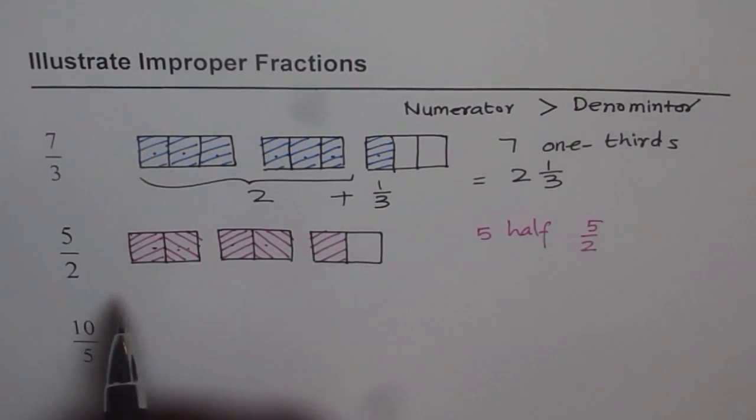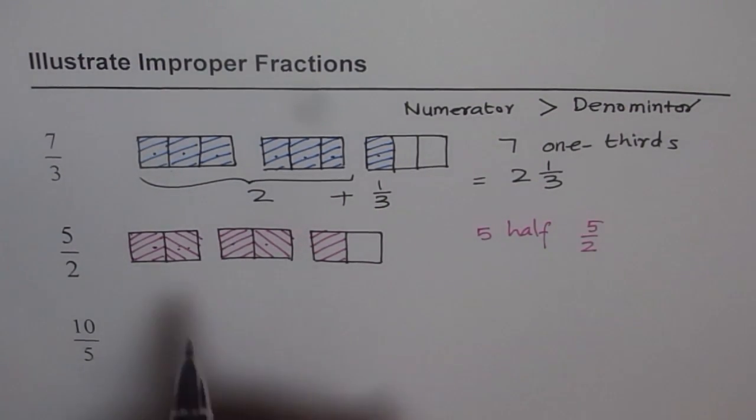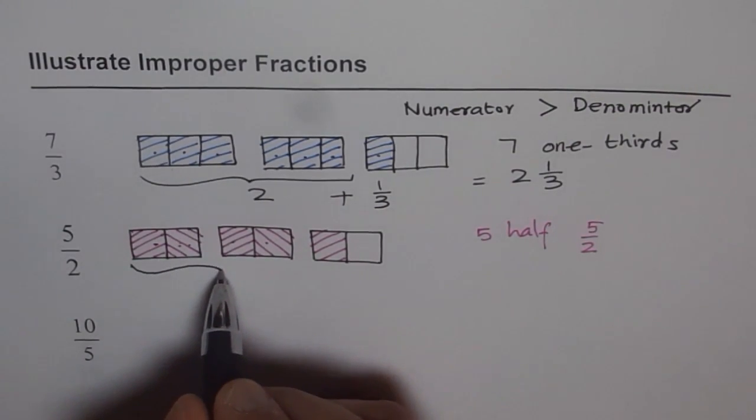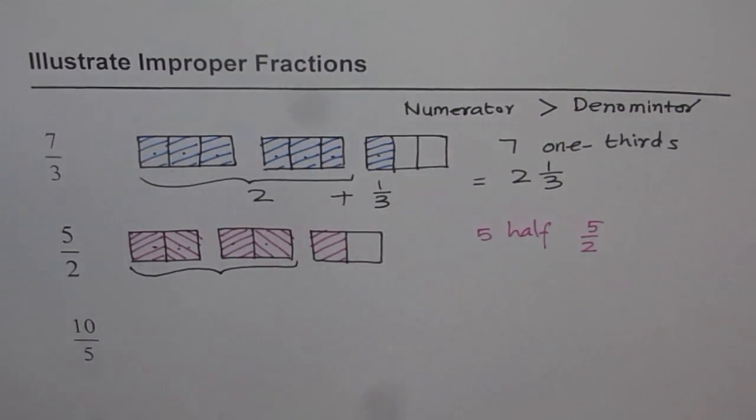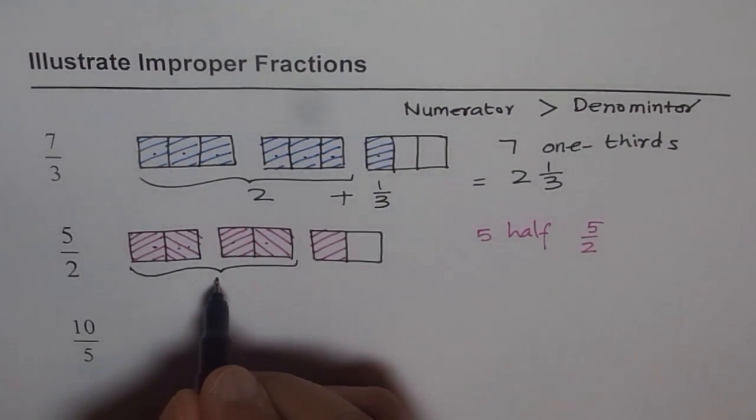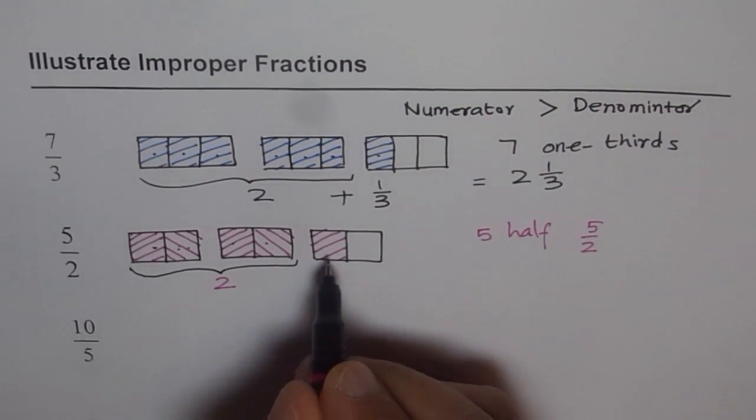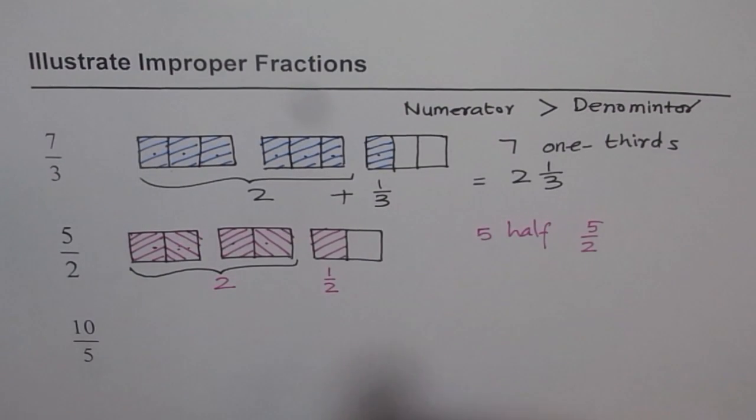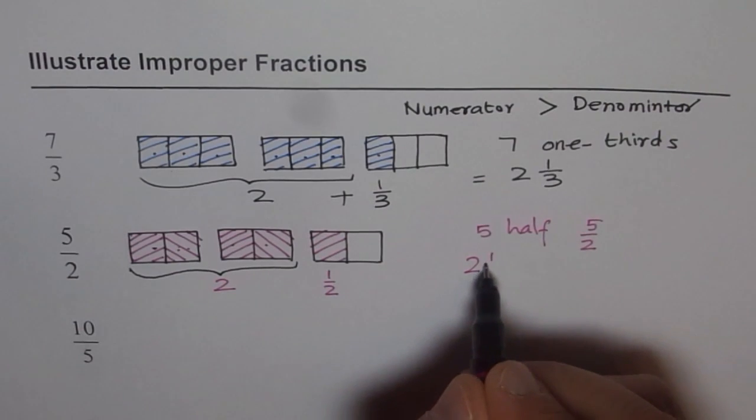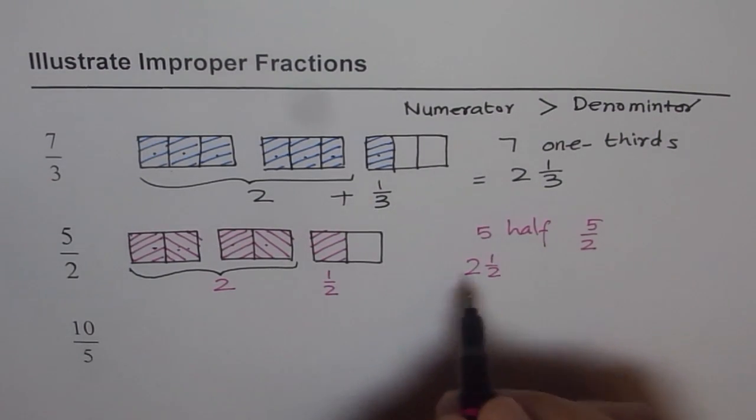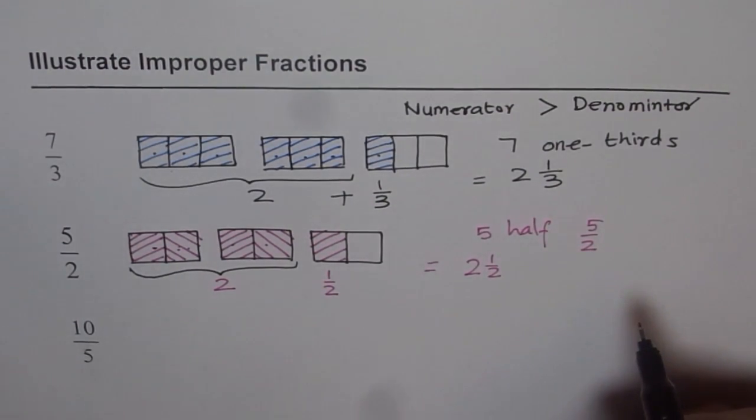Now, do you see that we have how many holes here? 2 holes, right? So we have 2 whole figures plus 1 half. So we get 2 and a half. So 5 half equals to 2 and a half, right?